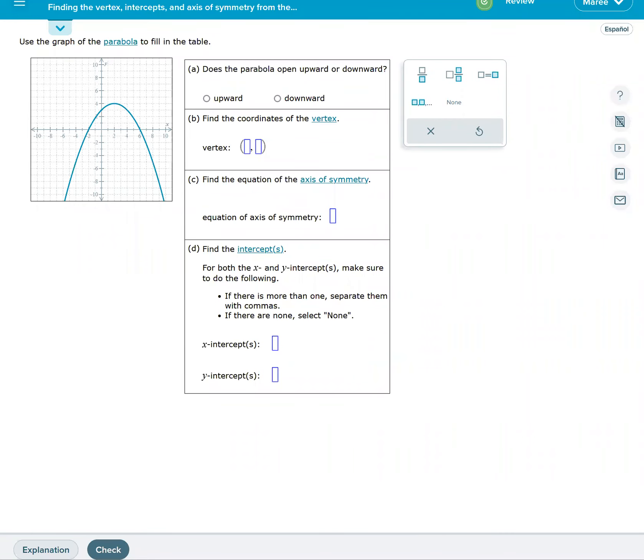This topic is called finding the vertex, intercepts, and axis of symmetry from the graph of a parabola. When we look at the graph of this parabola, we'll be able to answer all of the questions that they have given us. Does the parabola open upward or downward? We can see it's opening downward.